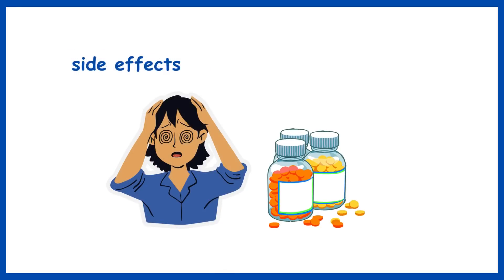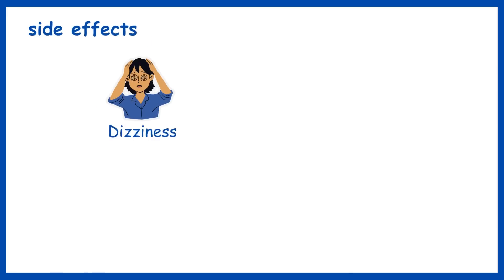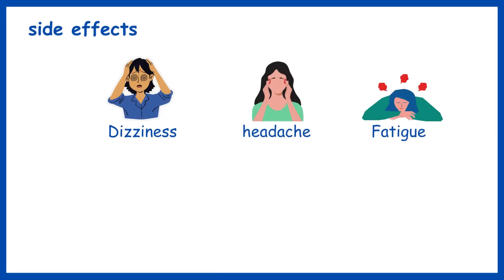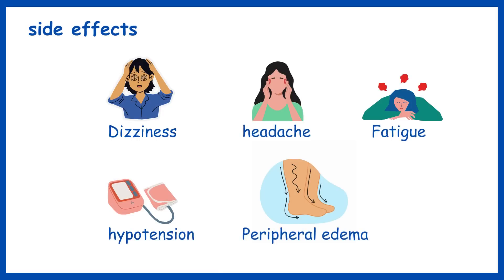Commonly reported side effects of dihydropyridine calcium channel blockers may include dizziness, headache, fatigue, hypotension, peripheral edema, etc.